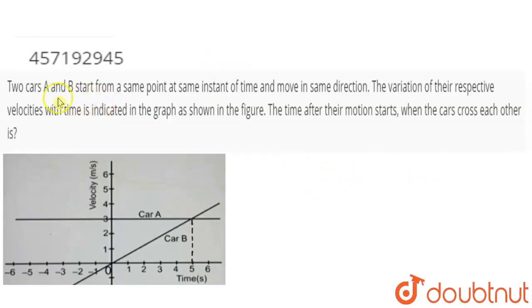Hi students, in this question, two cars A and B start from the same point at the same instant of time and move in the same direction. The variation of their respective velocities with time is indicated in the graph as shown in the figure. The time after their motion starts when the cars cross each other is?